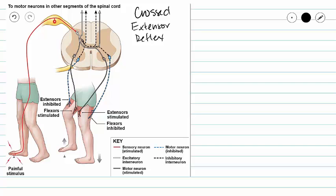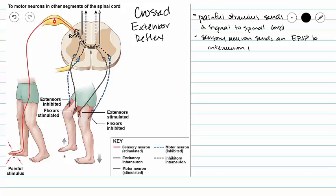Our first step is a painful stimulus. In our spinal cord, our sensory neuron is going to send an EPSP to interneuron 1. Now we are going to follow all of the actions of interneuron 1, and then we will follow the actions of interneuron 2.